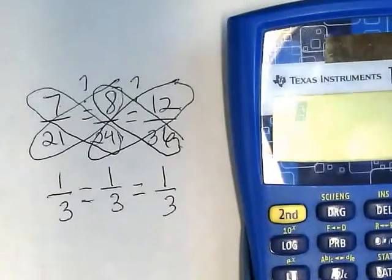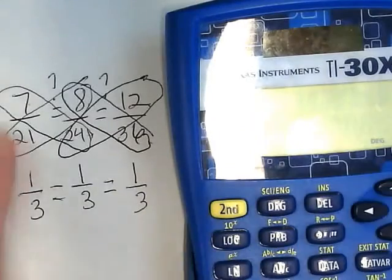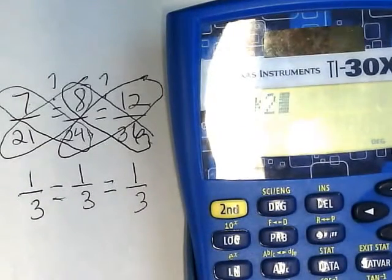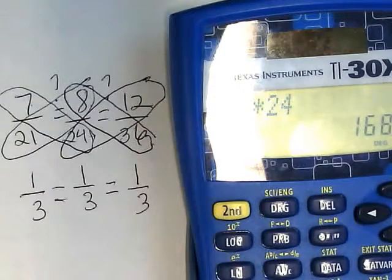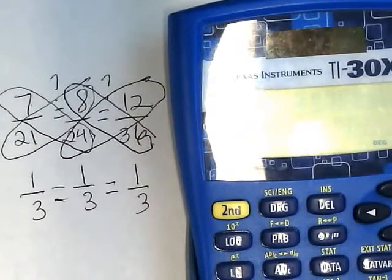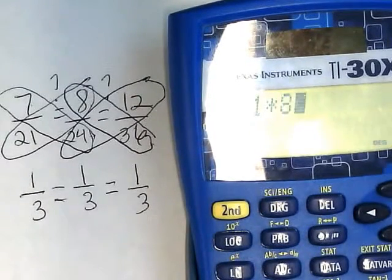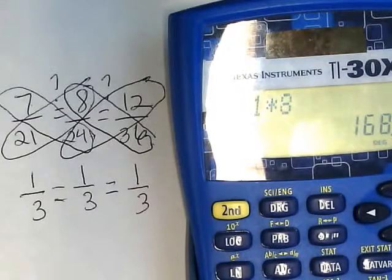Let me use this calculator. If I do 7 times 24, I get 168. Now I'm hoping that 21 times 8 is also 168. Do you see how that worked?